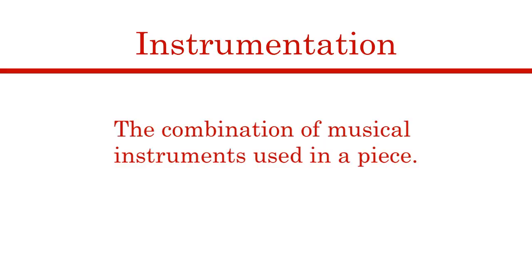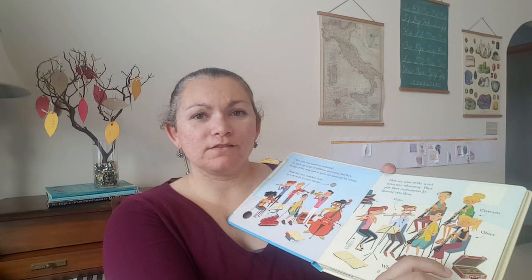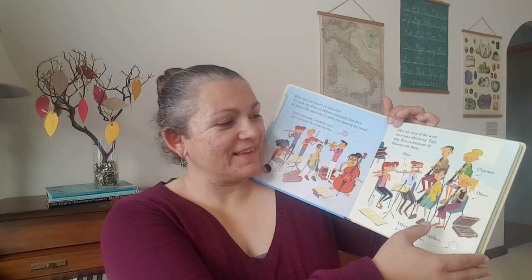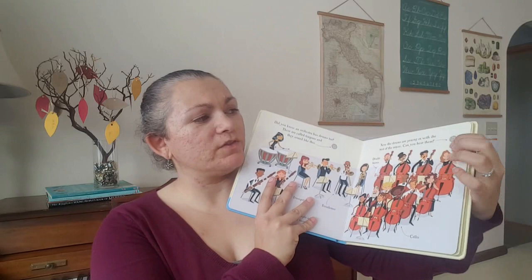Instrumentation refers to the combination of musical instruments used in a piece — pretty simple, right? This is a great opportunity to teach kids about the families of the orchestra and all the different instruments. I've had this Usborne First Book of the Orchestra for a while and we enjoy it. It actually plays music and goes through the different families, letting you hear what those families sound like — so that's what the strings are playing. It's a really simple but good introduction for kids.